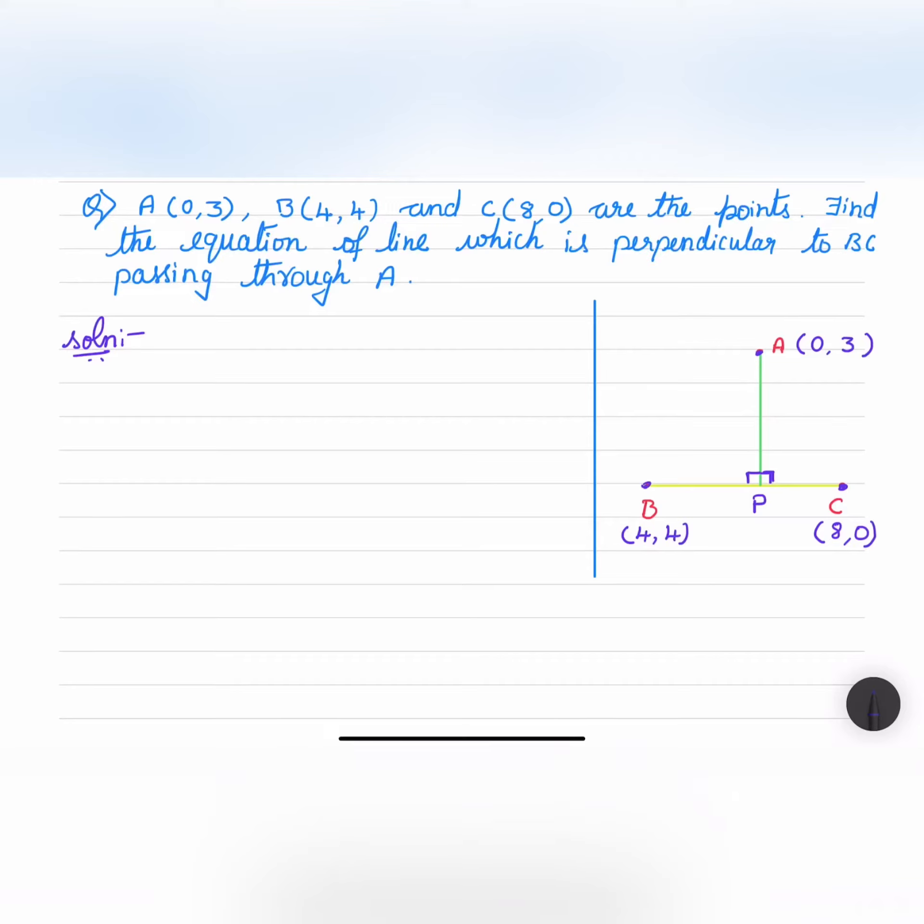Hello everybody, welcome to my channel. This numerical is A(0,3), B(4,4), and C(8,0) are the points. Find the equation of line which is perpendicular to BC passing through A. A, B, and C are the points and we have to find out the equation of the line which is passing through A and perpendicular to BC.